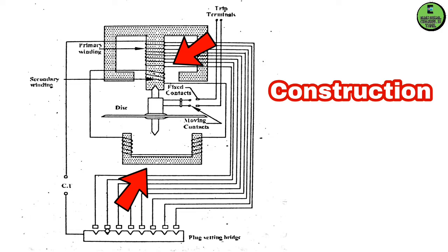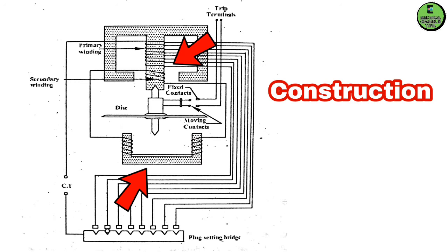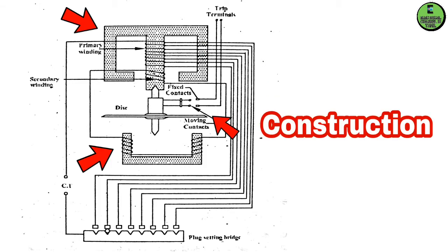The relay consists of two electromagnets — an upper electromagnet and a lower electromagnet. The upper electromagnet has primary and secondary windings placed on it. An aluminum disc is mounted on a spindle, and a moving contact is fixed to the spindle.